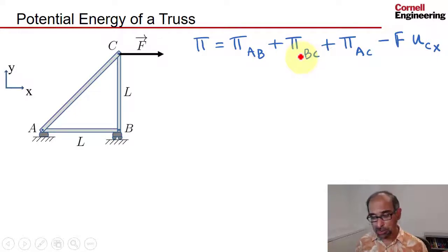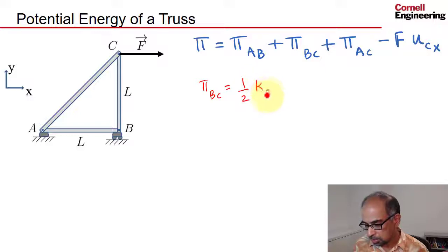So Π_BC is going to be half K_BC, as we saw previously, and then the extension squared of the extension of BC written in terms of the pin displacements.